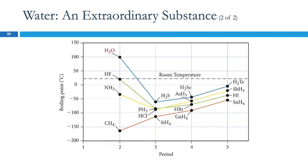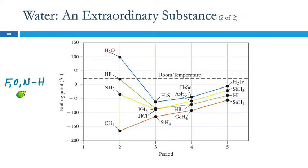But then there are these three molecules that are totally breaking the trend. These are polar molecules, which is why their boiling points are higher than the group four nonpolar molecules. But what's that other force? Hydrogen bonding — remember, hydrogen bonding, F, O, N — if you have fluorine, oxygen, or nitrogen bonded to hydrogen, you have that extra strong force. So these molecules have nitrogen-hydrogen, hydrogen-fluorine, and hydrogen-oxygen bonds, and the boiling point goes way up because of the stronger intermolecular forces.